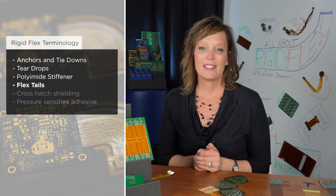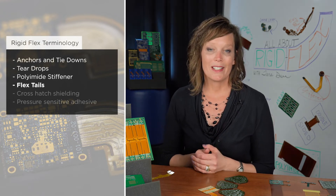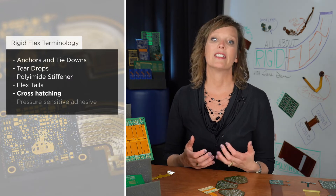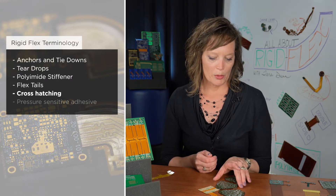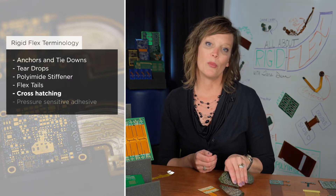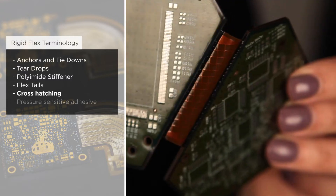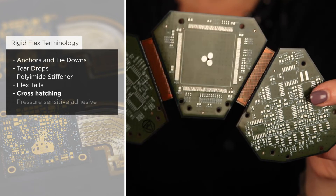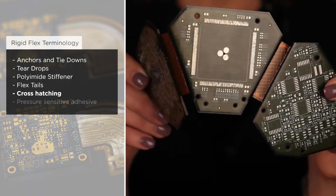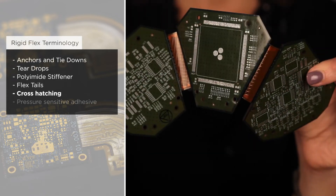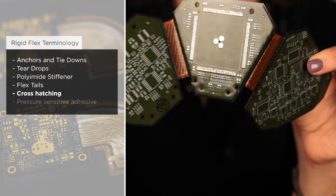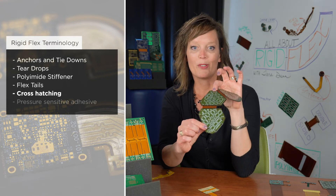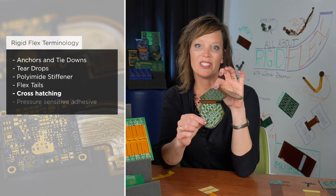Another thing somewhat unique in flexible circuit design is cross-hatching of the copper. If you've got copper shielding in an area that needs to be flexible, cross-hatching is a very common way to handle that situation. By simply eliminating copper — which can be done on a custom basis — you can make the openings wider or smaller depending on what your electrical properties can compensate for. This helps the circuit become much more flexible just by removing some copper.